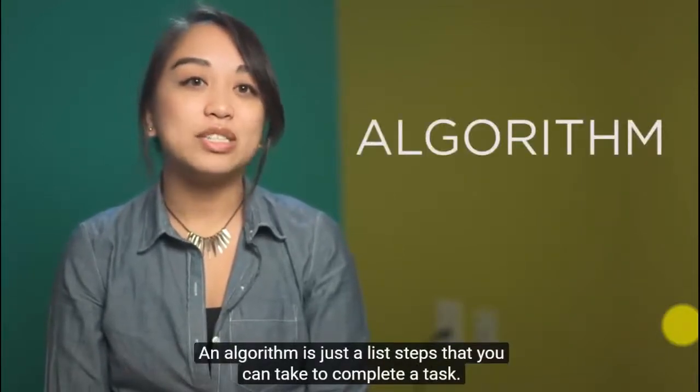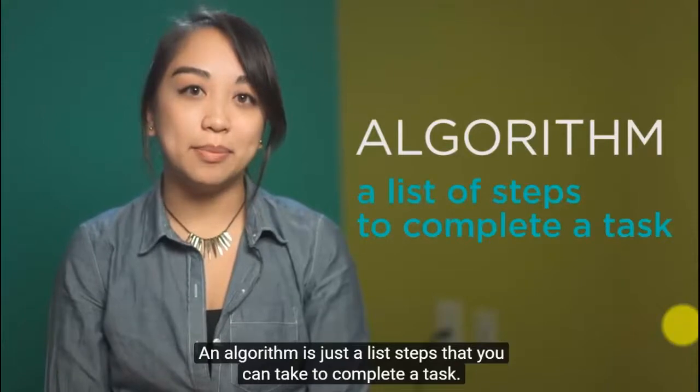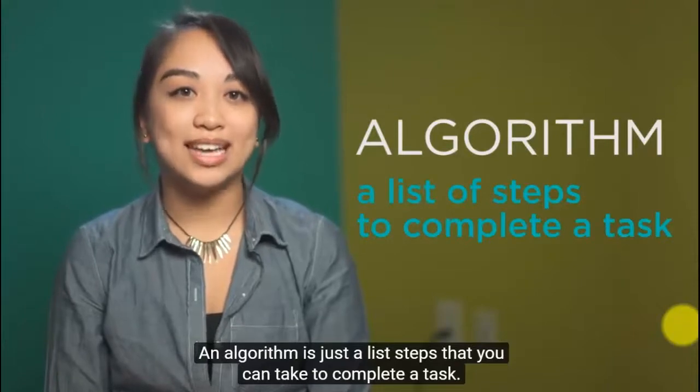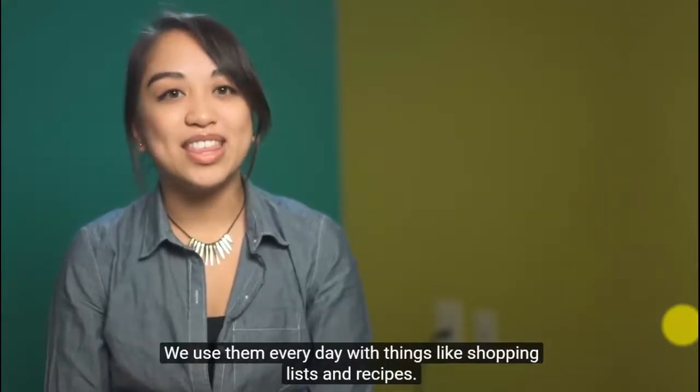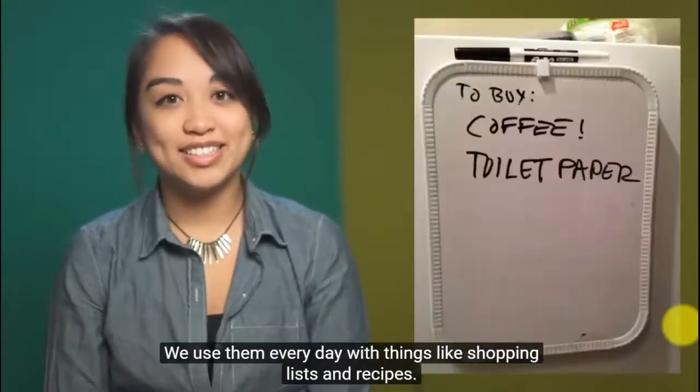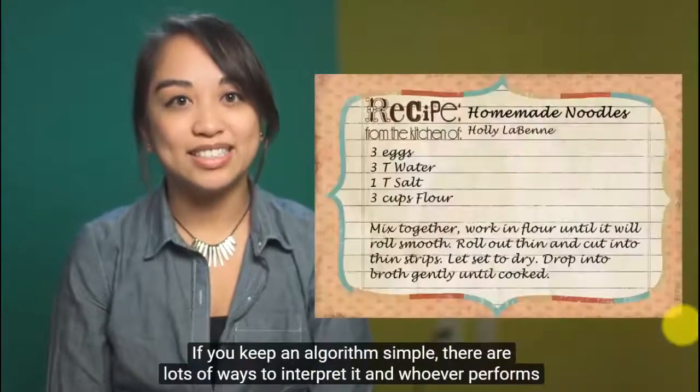An algorithm is just a list of steps that you can take to complete a task. We use them every day with things like shopping lists and recipes.